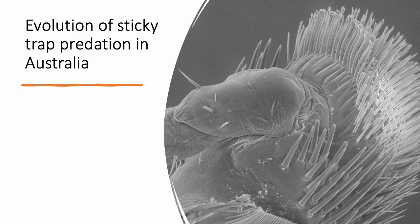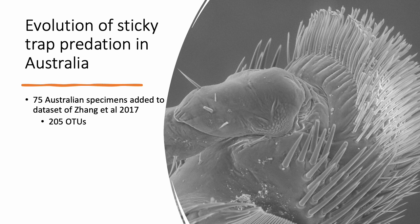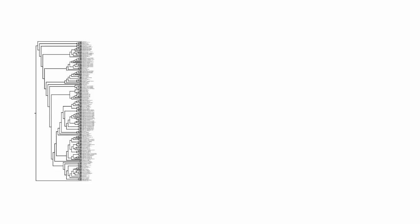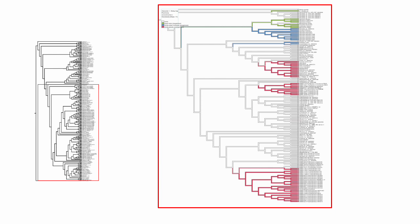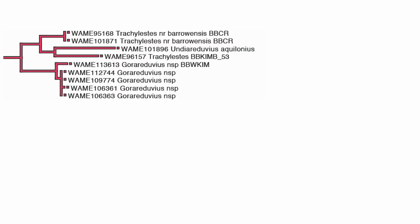Back to the broader question: given that sticky trap predation does exist in Australia and appears to be practiced by at least a few species, I figured it would be interesting to examine this from a phylogenetic perspective. So we took the existing data from Zhang et al. and added an additional 75 Australian specimens, giving a total of 205 terminals, then sequenced the same genes and ran the analysis through IQtree. Here's the phylogeny — within this red box is the Bactrodinae and Harpactrodinae. The topology has changed a little since the Zhang et al. paper but is more or less the same. What I want to draw your attention to are these two clades: Australian taxa that have been found covered with resin in our collection or that we've observed gathering resin.